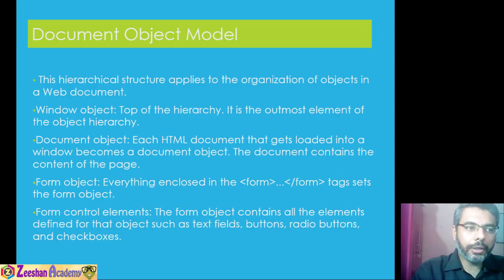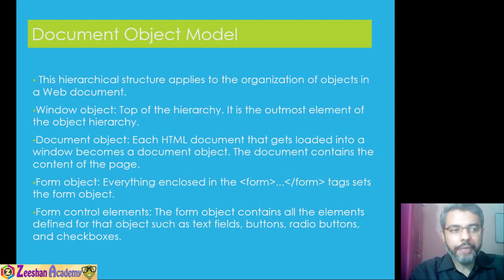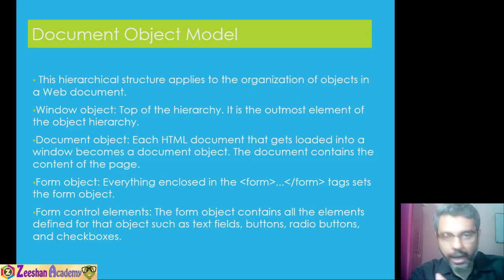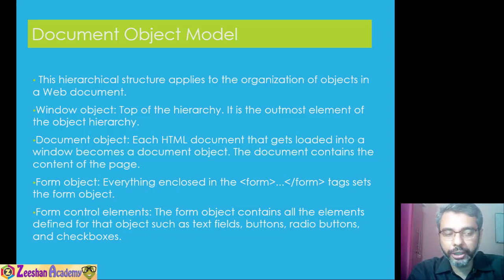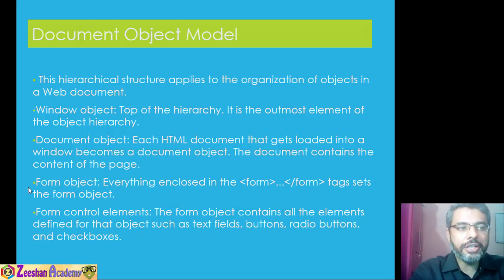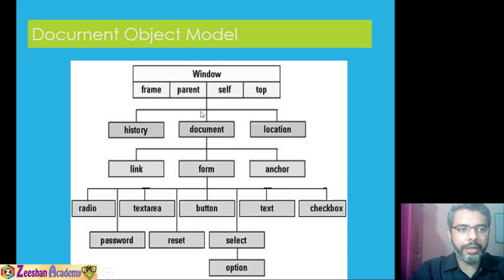This hierarchical structure applies to the organization of objects in a web document. The DOM basically provides a hierarchical structure that allows us to separate various elements within a web page. The window object is the top of the hierarchy — it is the outermost element. Then we have a document object, then a form object, then form control elements. Each of these components is referred to as a Document Object Model element.